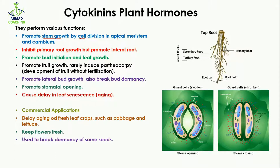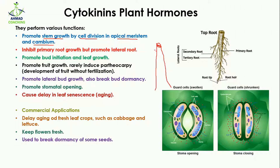Cell division occurs in the apical meristem of the stem as well as in the cambium. The actively growing cells at the tip of the stem are known as the apical meristem, and this hormone promotes division in this particular area. So the length of the stem can be increased, and it also increases cell division in the cambium area.